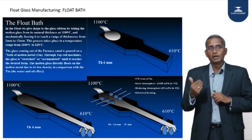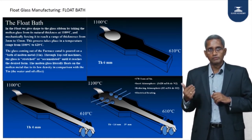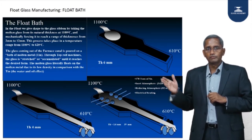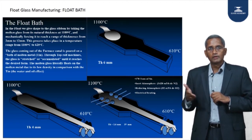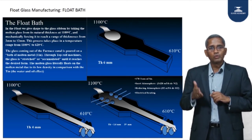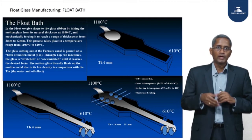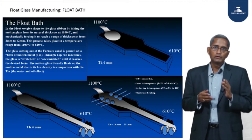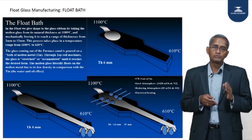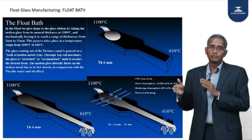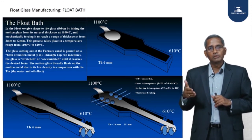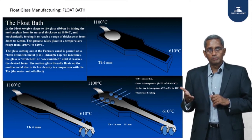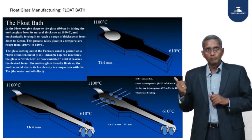When glass arrives at the float bath on a continuous basis, it comes at a steady pull rate — measured in tons per day. The flow of glass is controlled like water through a sluice gate in a dam. At the end of the furnace there is a twill which is regulated to open more or less to control the exact quantity of glass designed to flow into the bath. The glass flows in at 1100°C.